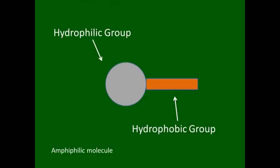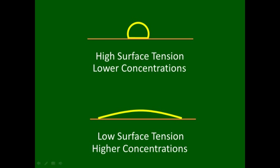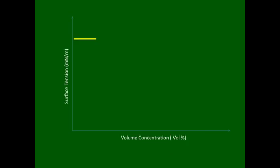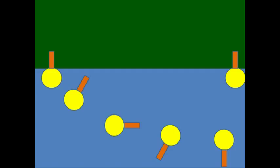A surfactant molecule has the characteristics of both hydrophobic and hydrophilic groups. Solutions with lower concentrations of surfactant may have a higher surface tension than solutions with a higher concentration of surfactant. However, at some point, the surface tension will not change even if the solution becomes more concentrated. When adding concentrated surfactant to water, the surface tension may have very little change due to the very low concentration of surfactants. Surfactant molecules are absorbed to the surface of the water with hydrophobic tails in the air and the hydrophilic heads in the water.